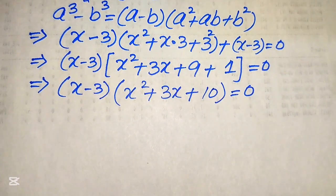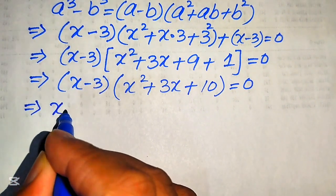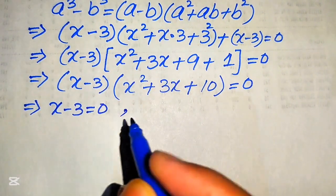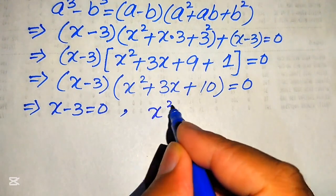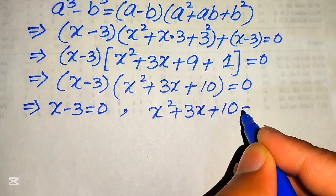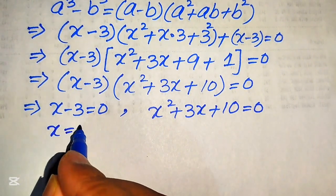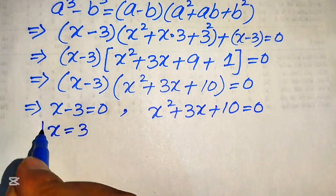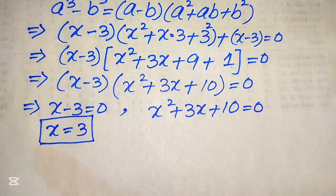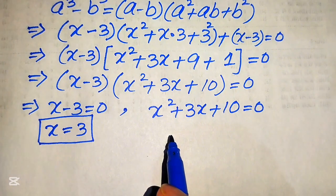We divide this equation into two cases. The first case is x minus 3 equals 0, and the second case is x squared plus 3x plus 10 equals 0. From the first case we easily get x equals 3. From the second case we need to find the values of x using the quadratic formula.